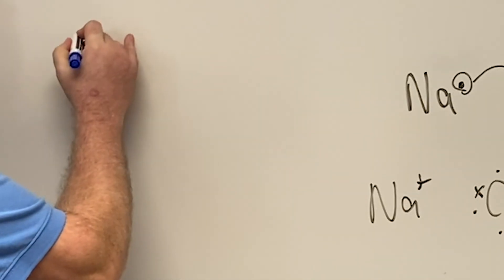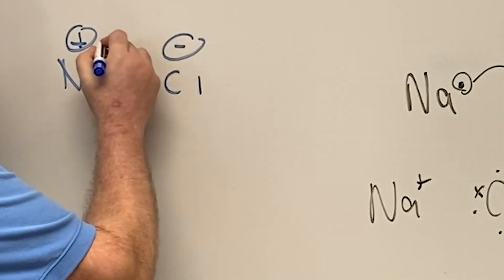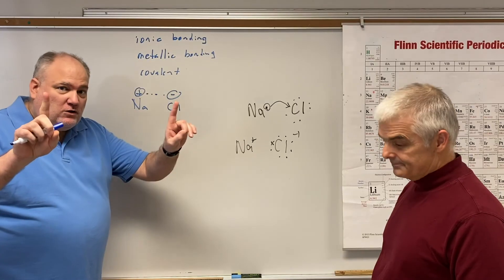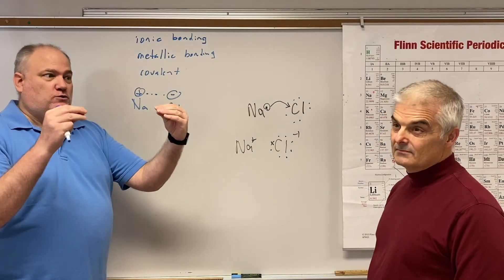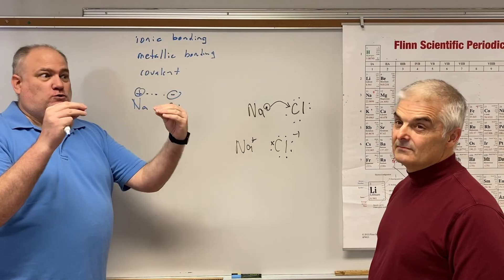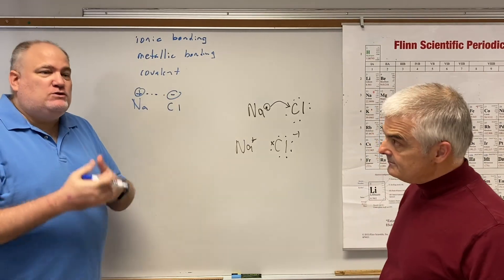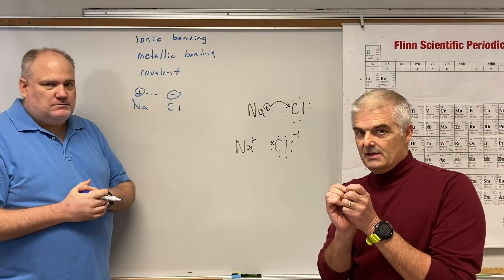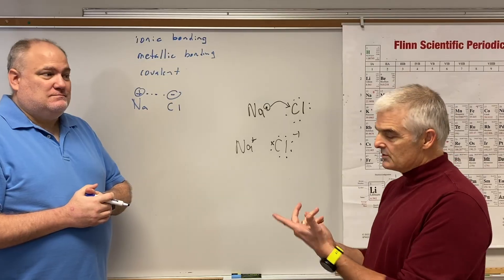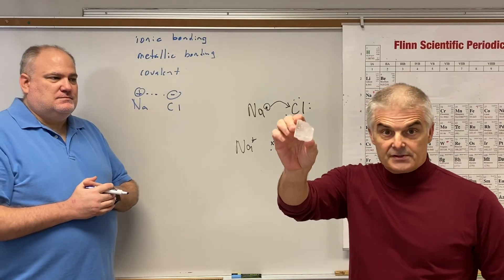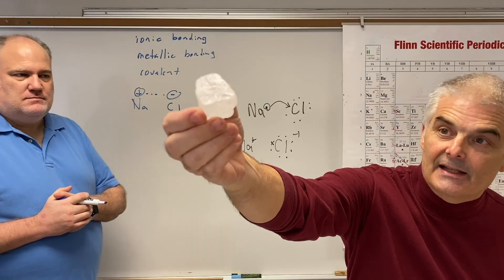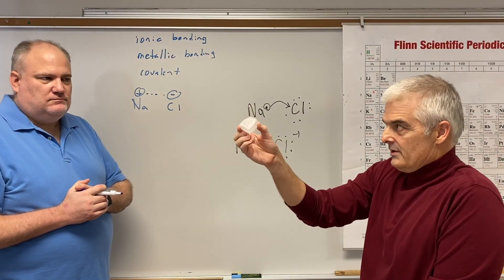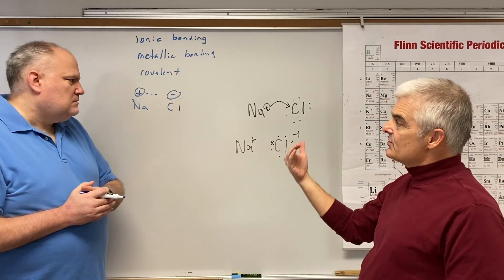We never have just one sodium and one chlorine wandering around interacting. It really happens with trillions and trillions of these ions all the time. A tiny grain of salt is trillions of sodiums connected to trillions of chlorides. Here's a piece of halite — just a big piece of salt — with more than trillions, gazillions of sodiums and chlorides.